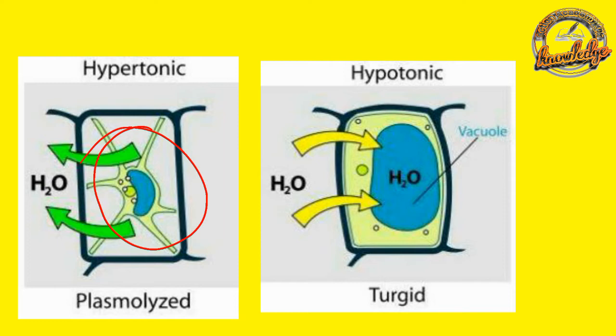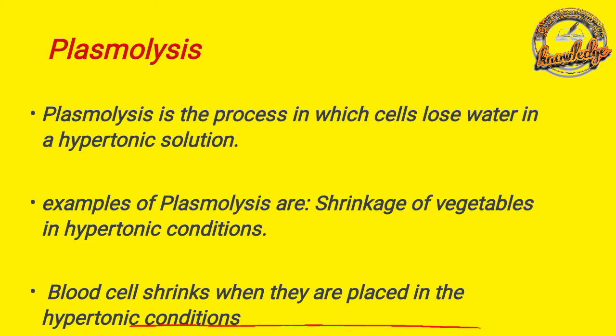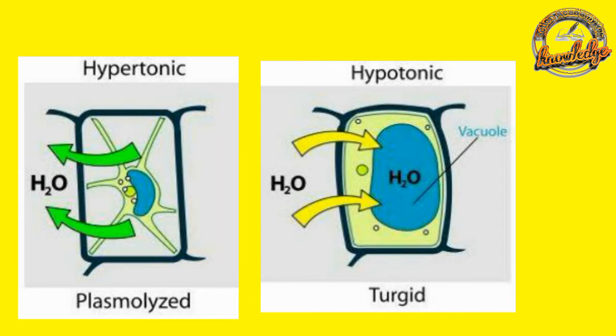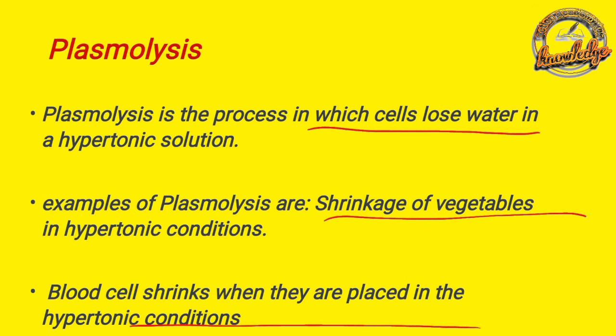Water is going to be lost in plasmolysis. Plasmolysis is the process related to the soil. Water loss occurs due to the hypertonic solution. The water is shrunken — so this is hypertonic. The example is a vegetable: water is shrunken.